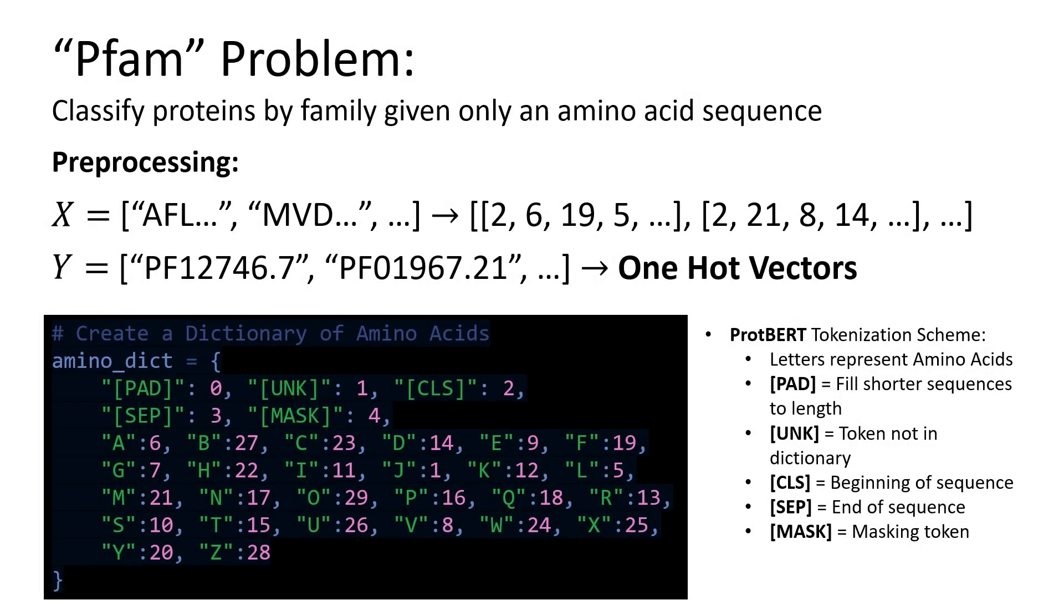To speak to this problem in a little more detail, I chose the PFAM dataset, which can be found online and consists of independent variables which are amino acid sequences, with the goal of predicting the dependent variable which is a protein class. In order to preprocess the amino acid sequences, I use the proper tokenization scheme where each amino acid is assigned an integer value.